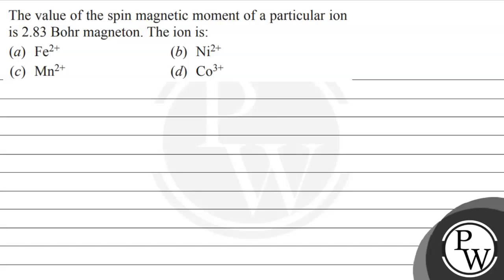Hello, let's read this question. The value of the spin magnetic moment of a particular ion is 2.83 Bohr magneton. The ion is — and the following options are given to us.